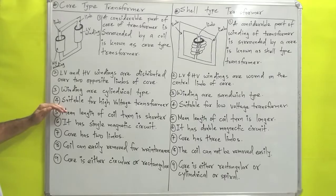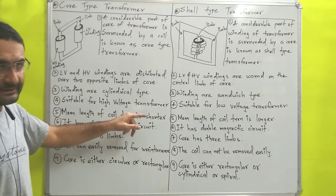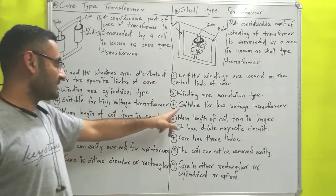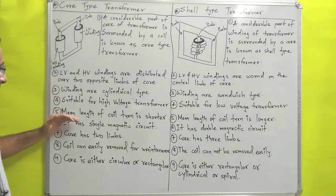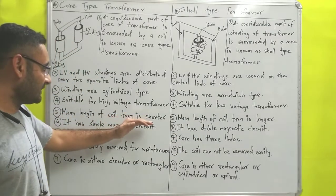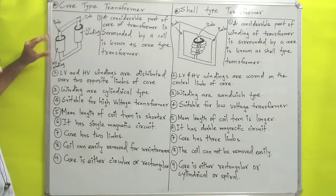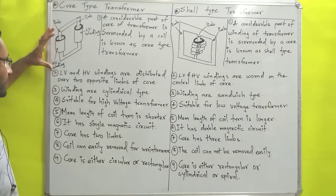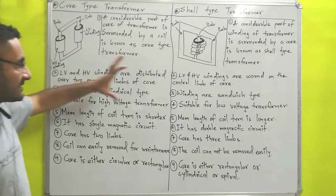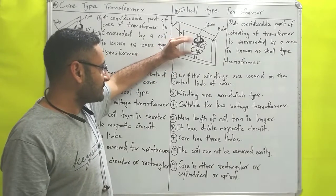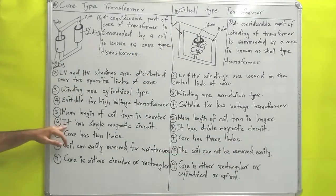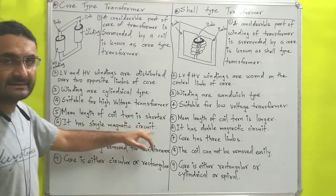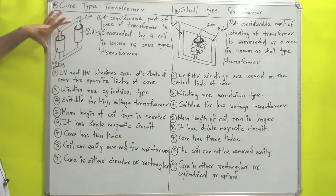The fourth difference is that the core type is suitable for high voltage transformers, while the shell type is suitable for low voltage transformers. Next, the mean length of coil turns in the core type is shorter, because the windings are tightly wound near to each other, so the length of the coil is less. In the shell type, since the windings are sandwiched, the length of the coil turns is longer.